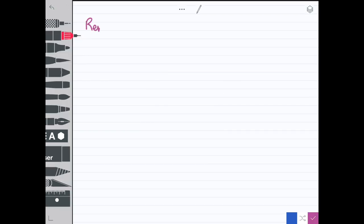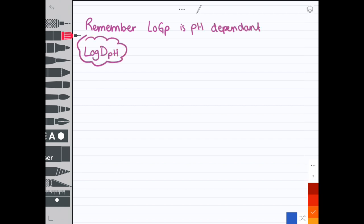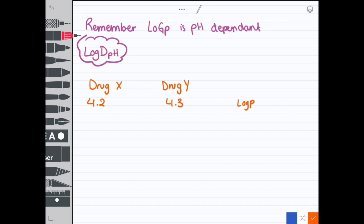Remember, log D pH is the log P at a specific pH. Let's take this example. You have two drugs, drug X and drug Y. Drug X has a log P of 4.2 and drug Y has a log P of 4.4, so you would say they have the same lipophilicity. However, when tested at pH 7, drug X had a log D of 4 and drug Y had a log D of 1.5. You see that the lipophilicity changed just by changing the pH. That's what I was saying about the human body—the different changes in pH can influence drugs.